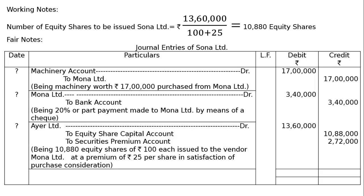Third entry — Mona Limited debited ₹13 lakh 60,000 (that is 17 lakhs minus 3 lakh 40,000). Note: by mistake 'IR Limited' was written; it should be Mona Limited. Credit: Equity Share Capital Account ₹10,88,000 (10,880 × ₹100) and Securities Premium Reserve Account ₹2,72,000. Narration: being 10,880 equity shares of ₹100 each issued to the vendor Mona Limited at a premium of ₹25 per share in satisfaction of purchase consideration.